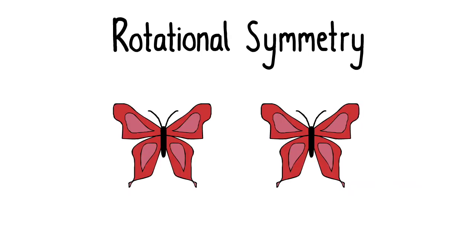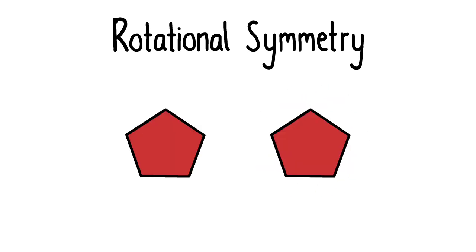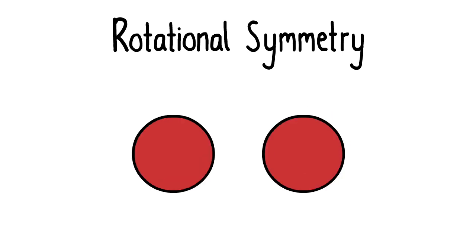Another type of continuous symmetry is rotational symmetry. Since the butterfly doesn't appear the same under rotations other than 360 degrees, it doesn't have rotational symmetry. However, the pentagon looks the same any time we rotate it by a multiple of 72 degrees. In fact, the sphere looks the same when rotated under any number of degrees. We can't even tell that it's rotating.